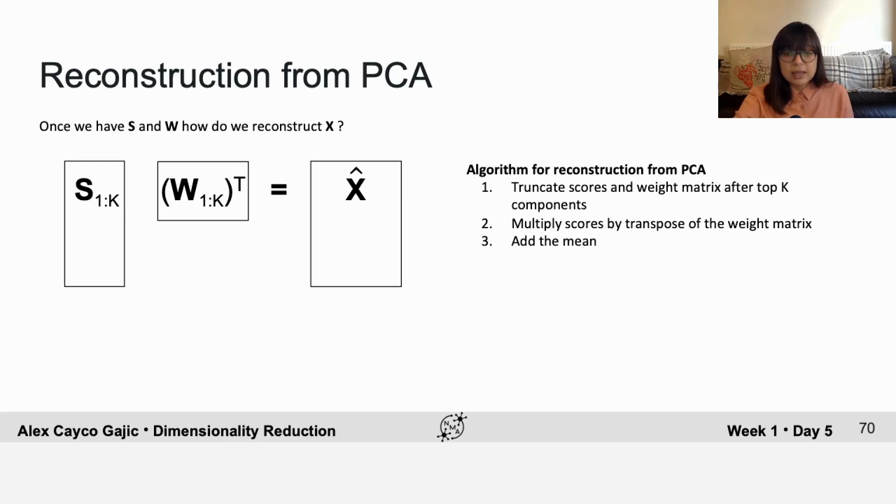And it turns out that if you do that optimization problem, you again find the eigenvectors of the covariance matrix. So it turns out that PCA has two equivalent formulations, either minimizing the reconstruction error or maximizing the projected variance. And that's actually pretty cool.